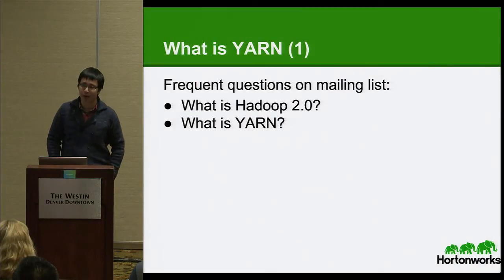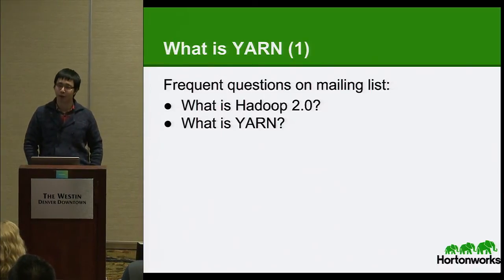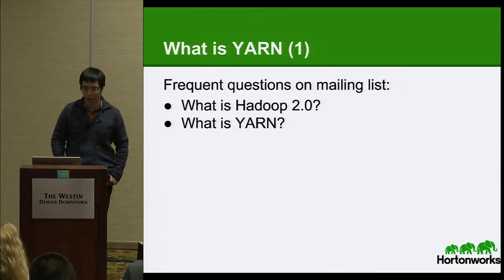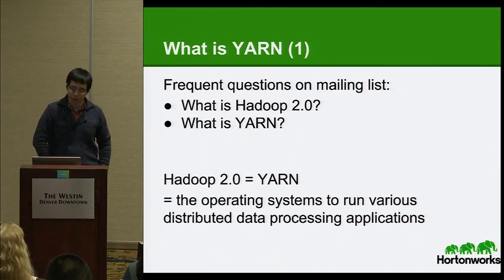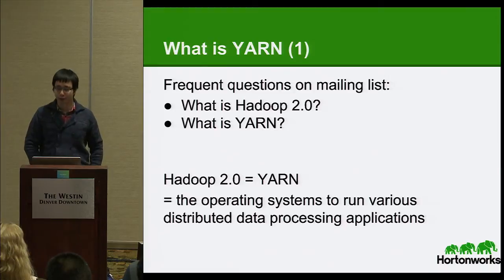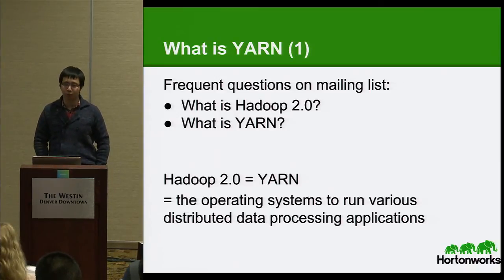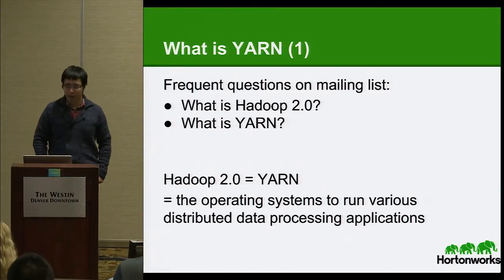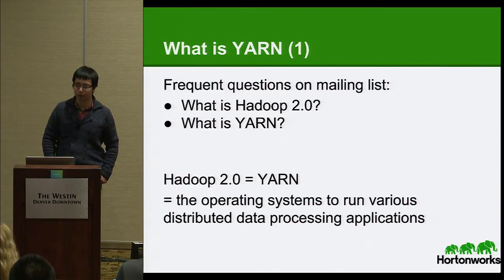So let's go to the first part. These are the two questions I have observed on the user mailing list of Hadoop frequently. One is: what is Hadoop 2? The other is: what is YARN? The simple answer is that Hadoop 2 is YARN, and it is an operating system to run various distributed data processing applications. A lot of people here have tried Hadoop 1 before and run MapReduce jobs. MapReduce has already served people very well, so why do we need YARN?